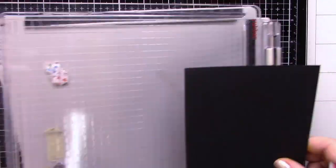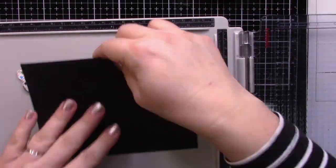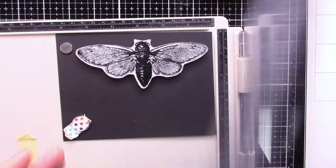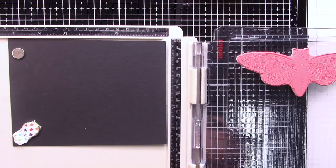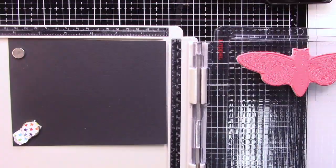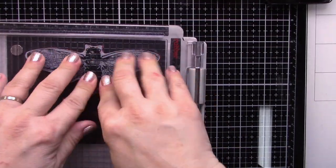This is my focal image. It's a stamp by Tim Holtz. It's a moth and I will be heat embossing and I will combine two embossing inks.